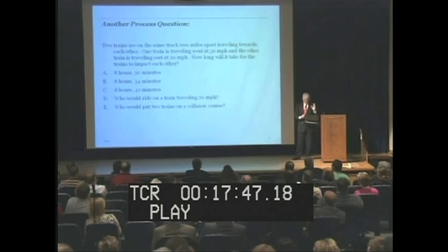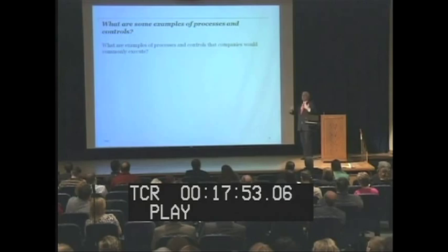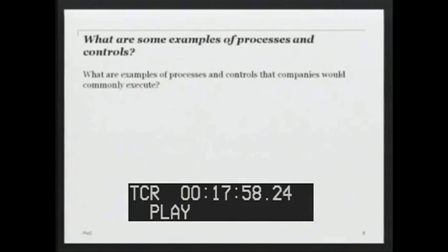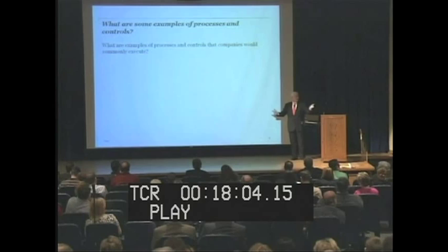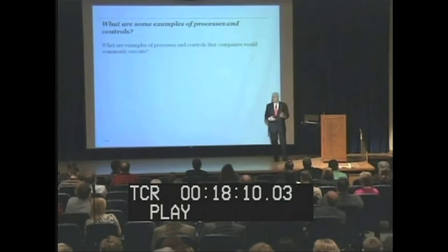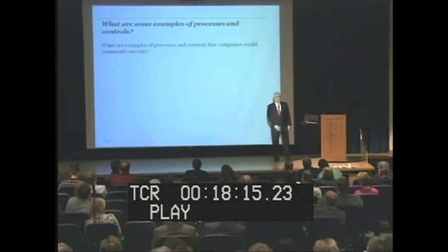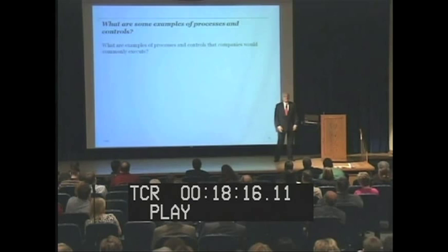Let's talk about processes. Give me some examples of processes and controls that companies commonly execute. Cash received — recorded correctly as to amount and period, the receiving cycle where we pull in cash and record it. The other side: payables, procurement. Payroll systems — how do we deal with employees? So there are lots of processes, lots of controls, and some very simple basic ideas. These are basic processes that all companies have.